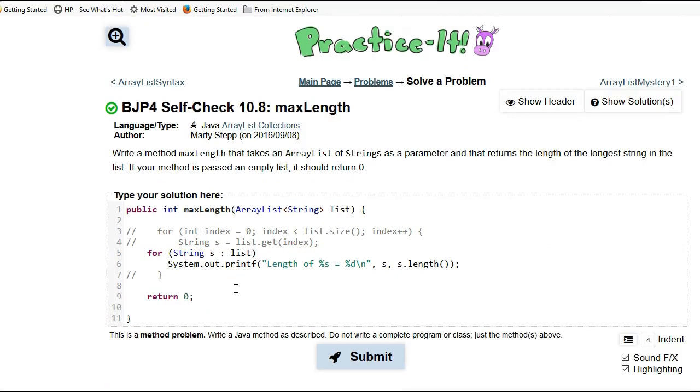Now the difference between whether you want to use one versus the other is if you ever need the index of the item that you're looking at, you can't use this format here. Okay, so this is great for iterating through arrays if you just want to get the values. It's not going to work if you need the indices.